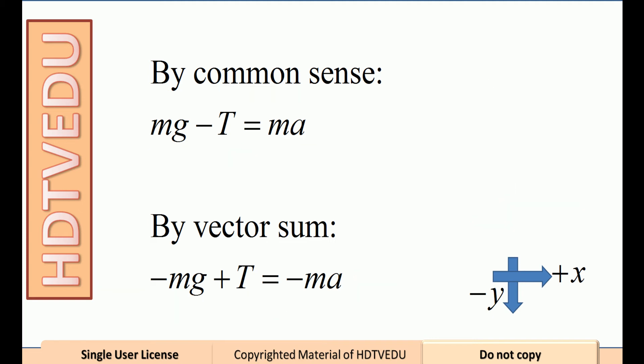So by common sense, mg minus T equals ma. By vector sum, we still get mg minus T equals ma. Do not forget,